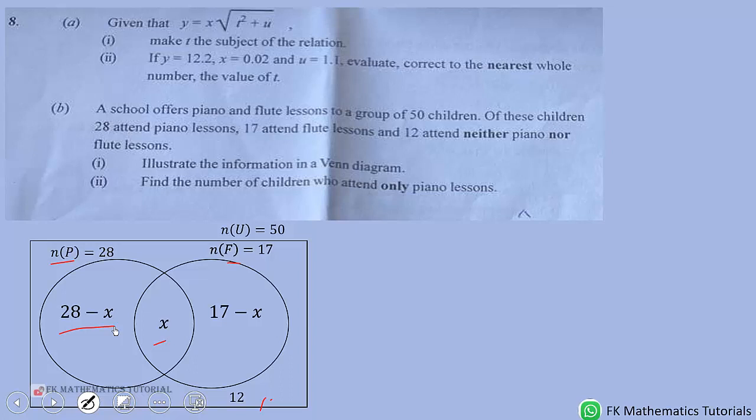To find that, we need to solve for the value of x and subtract it from 28 to get only piano lessons. So, we add everything. This, this, this.